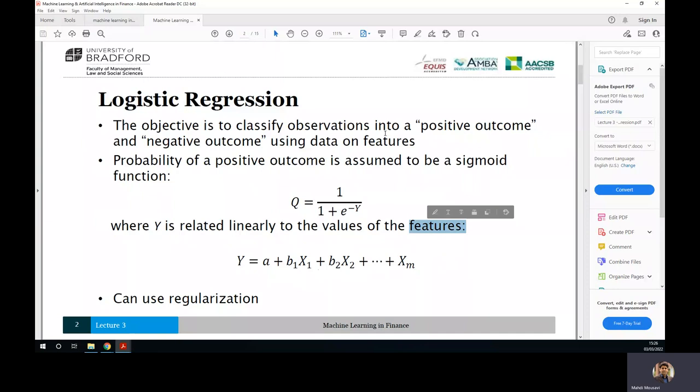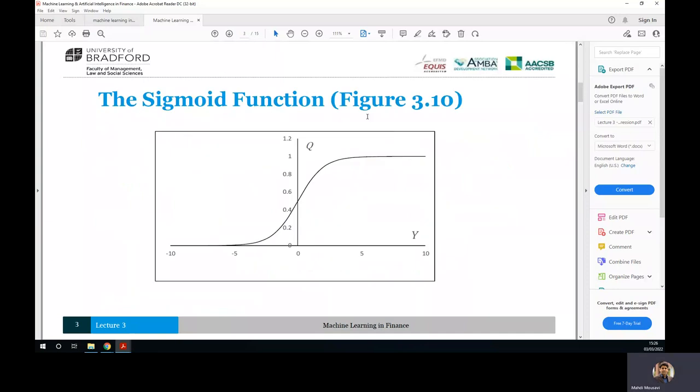All right, so this is the sigmoid function. As you see, the θ, which is the probability, has got a value between zero and one. So it cannot be less than zero. It cannot be more than one. The value of θ as a probability is between zero and one. And it makes sense. The probability that, for example, tomorrow rain is 20% or 70% or 80%. So the value is between zero and one. Zero means zero percent, one means 100%.